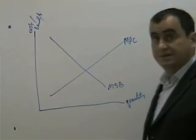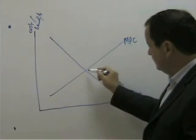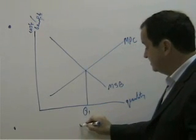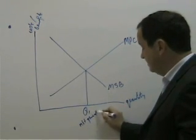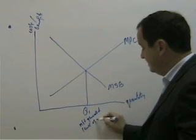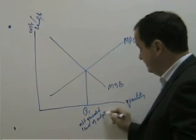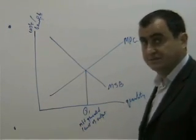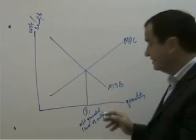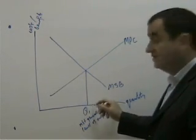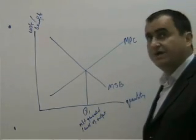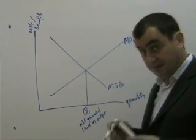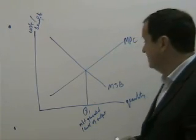The marginal private costs, upward sloping, creates an equilibrium point here, Q1, which represents the market generated level of output. That's the level of output that would be created if we left things to market forces. They wouldn't consume more than this because the next unit would create more costs than benefits. So even when only considering private costs and benefits, Q1 is the level of output that would be generated by the price mechanism.